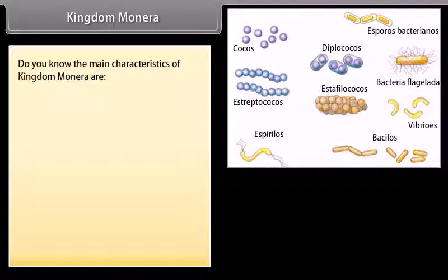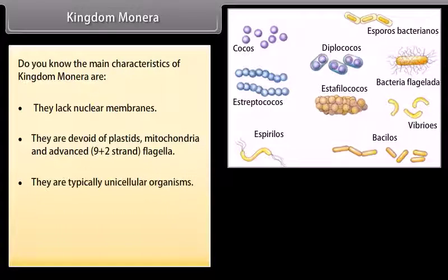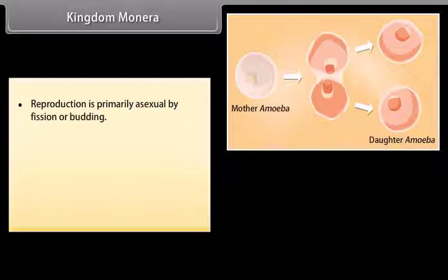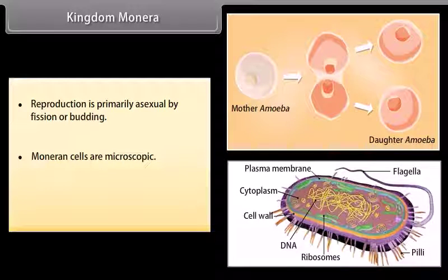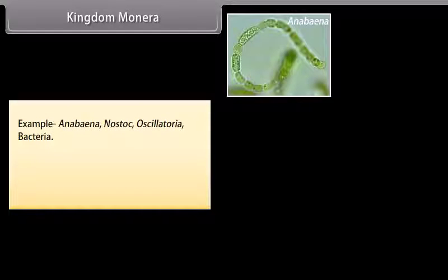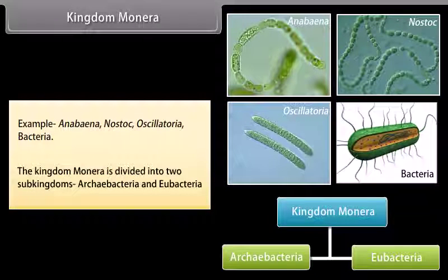Kingdom Monera: The main characteristics of Kingdom Monera are that they lack nuclear membranes and are devoid of plastids, mitochondria, and advanced 9+2 strand flagella. They are typically unicellular organisms. The predominant mode of nutrition is absorptive, but some groups are photosynthetic or chemosynthetic. Reproduction is primarily asexual by fission or budding. Moneran cells are microscopic and most organisms bear a rigid cell wall. Examples include Anabaena, Nostoc, Oscillatoria, and Bacteria. The kingdom Monera is divided into two sub-kingdoms: Archaebacteria and Eubacteria.